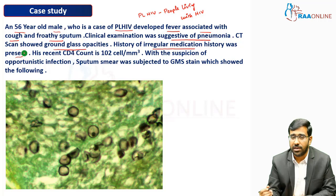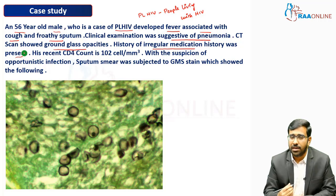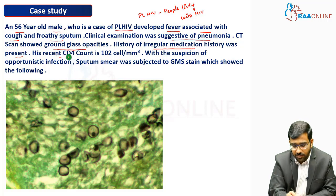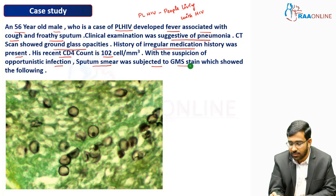The patient is a case of PLHIV who had not been taking proper antiretroviral drugs. When an HIV patient does not take their antiretroviral medication, there is a reduction in CD4 cell count, which can lead to opportunistic infections. His recent CD4 count was 102 cells per millimeter cube. Given the suspicion of opportunistic infection, the sputum sample was subjected to Gomori Methenamine Silver (GMS) staining.